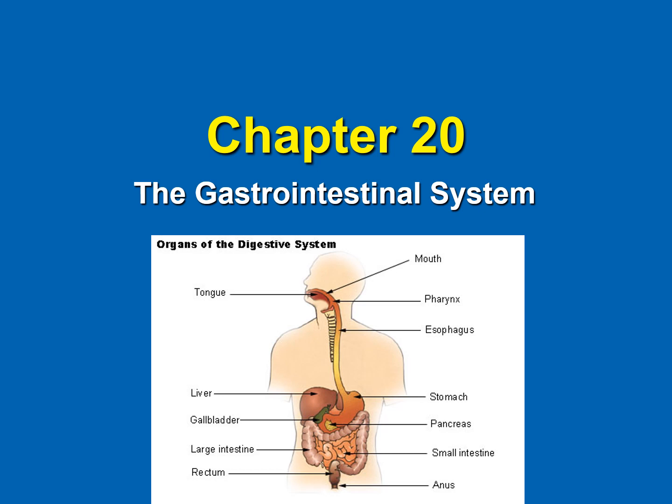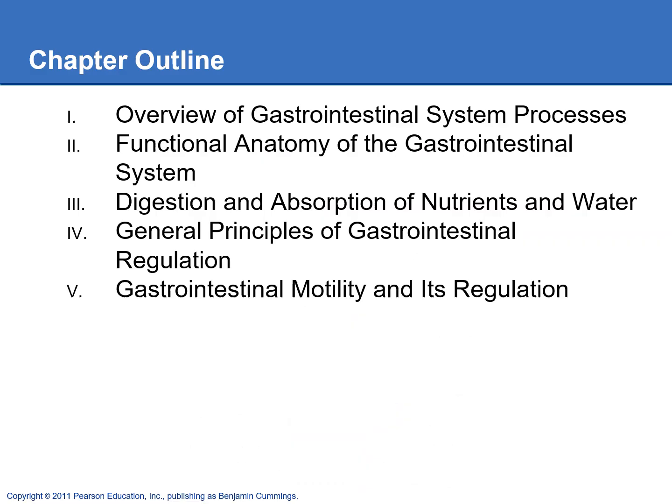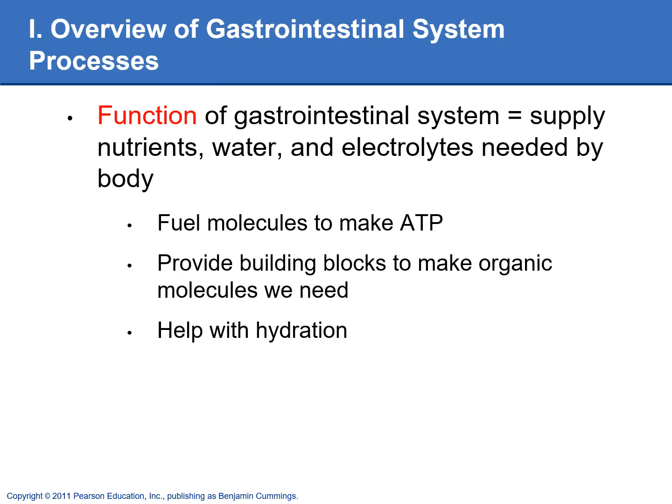The GI system is really pretty straightforward. The function of having a GI system is obviously so we can get nutrients and water that the body needs so we can stay hydrated, make ATP, and then make other organic molecules that we need in the body.